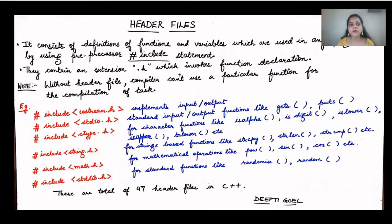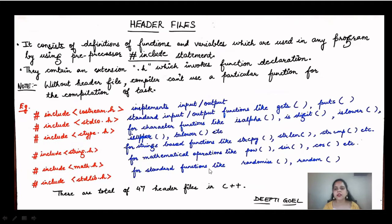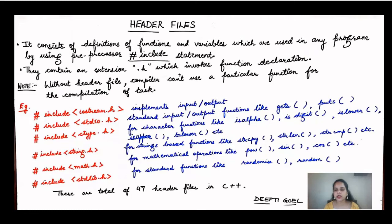Header files are the definitions of functions and variables which are used in any program. They are always written using a preprocessor directive — the hash include. You can see that we write hash include, and within the less-than and greater-than signs we write iostream.h. The header file always contains the .h extension.